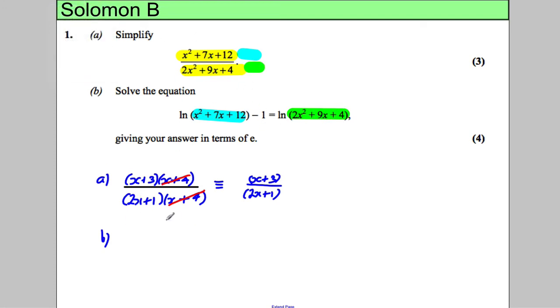If we were to subtract ln of 2x squared plus 9x plus 4 from both sides and add 1 to both sides so that the lns are together, we would get the following line.